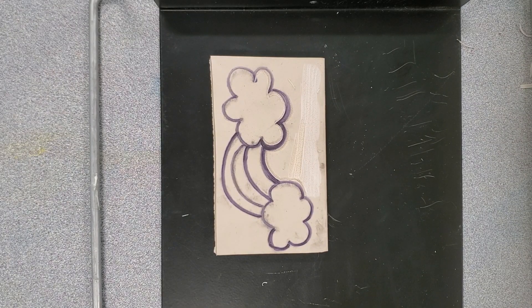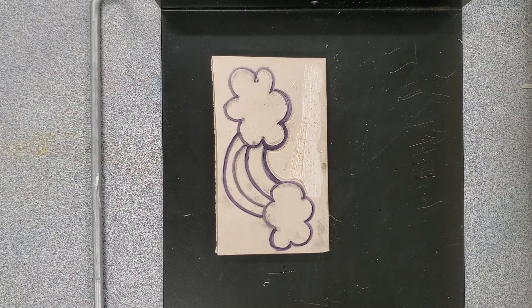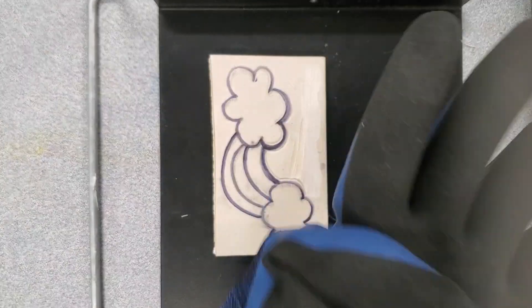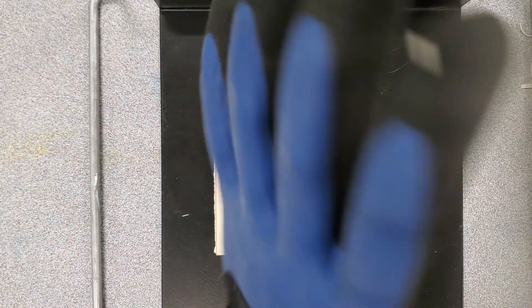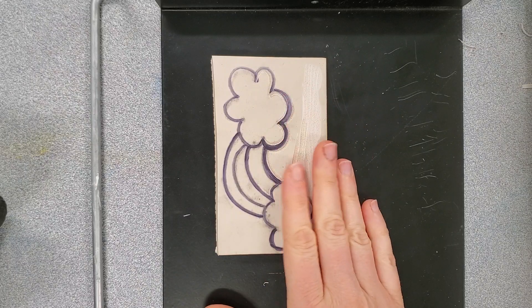All right, seventh grade, to begin carving your stamp, you're going to need to make sure that you have a glove on your non-dominant hand, that you are working on a bench hook, and that you're only making surface level cuts into your rubber.